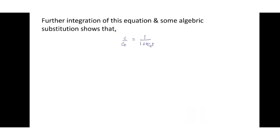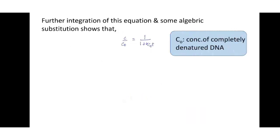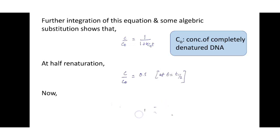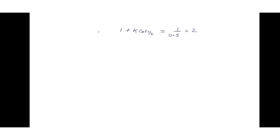Further integration of this equation and algebraic substitution shows that C/C₀ = 1 / (1 + kC₀t), where C₀ is the concentration of completely denatured DNA. At half re-naturation, C/C₀ = 0.5. Substituting this value gives: 0.5 = 1 / (1 + kC₀t½), which rearranges to kC₀t½ = 1, yielding C₀t½ = 1/k. The product C₀ × t½ is called the Cot half, which is inversely proportional to the rate constant.